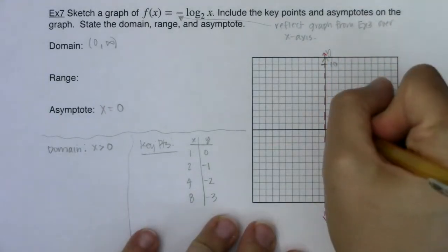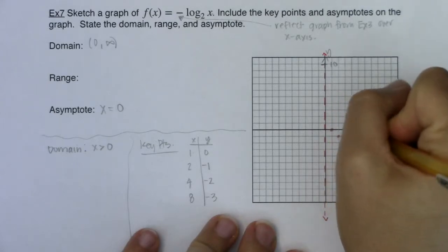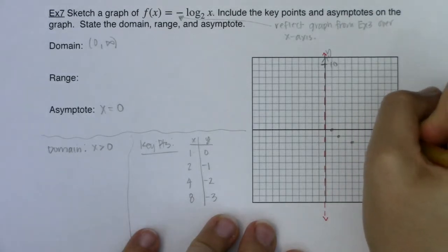Let me go graph these. So I had one, zero. Two, negative one. Four, negative two. And then eight, one, two, negative three.